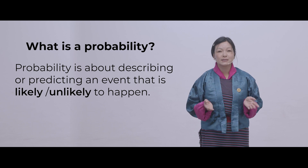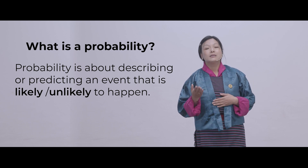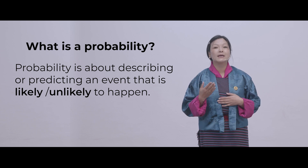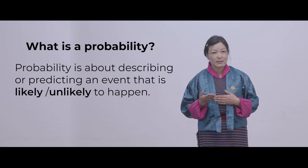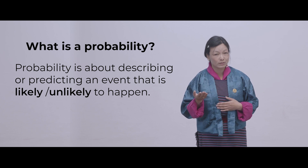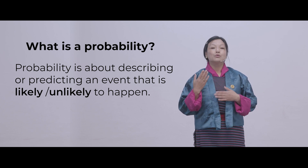Probability is about describing or predicting an event that is likely or unlikely to occur. Whenever you think of probability, you might think it is always likely to happen — but it is not like that. It is sometimes unlikely to happen.